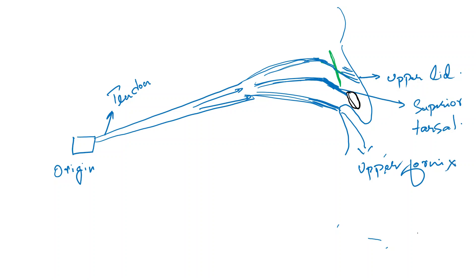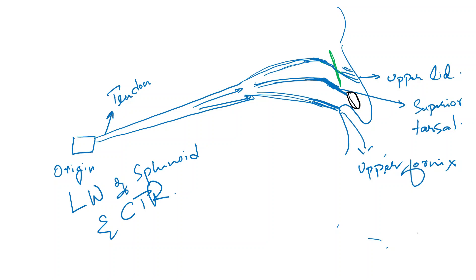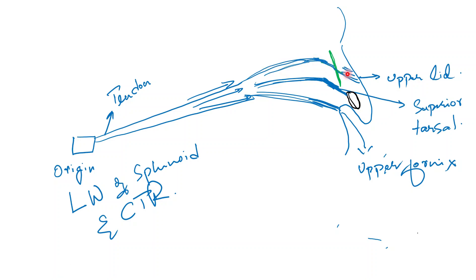To summarize the attachments of the levator palpebrae superioris: the origin is from the lesser wing of the sphenoid bone along with the common tendinous ring. From this point of origin, the muscle is directed straight forward, becomes broad and fleshy, and divides into three lamellae — superior, middle, and inferior. The superior lamella crosses the orbital septum, merges with the orbicularis oculi, and inserts onto the skin of the upper eyelid. The intermediate lamella makes up the superior tarsal muscle, attached to the superior tarsus. The inferior lamella inserts onto the superior fornix of the conjunctiva.